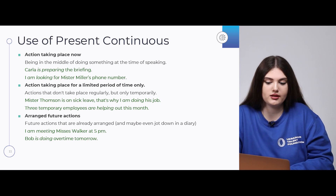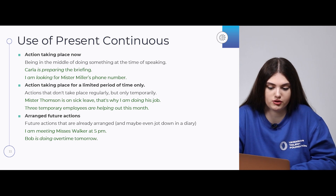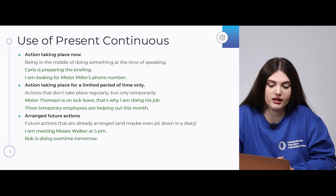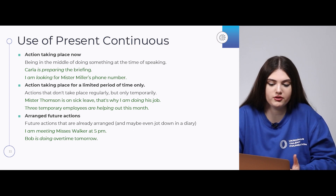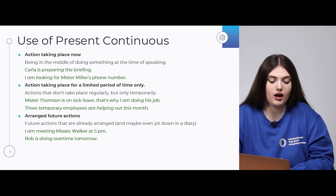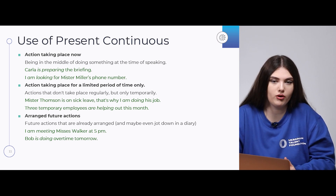Present continuous is also used for actions taking place for a limited or temporary period. 'Mr. Thompson is on sick leave, that's why I am doing his job.' 'Three temporary employees are helping out this month.' All these actions are not happening regularly — they just happen now for some short or longer period of time. The third use is for arranged future actions — actions that will happen in the future and are already planned: 'I am meeting Mrs. Walker at 5 pm' or 'Bob is doing overtime tomorrow.'